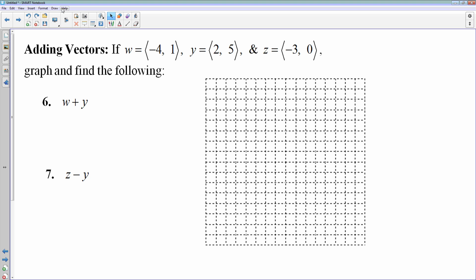Now adding vectors algebraically is very easy. Like right here I have vectors w, y, and z. And if I want to find vector w plus y, you simply add the corresponding components. So vector w is negative 4, 1, y is 2, 5. So w plus y is negative 4 plus 2, and then 1 plus 5, which is negative 2, 6. Pretty simple stuff.